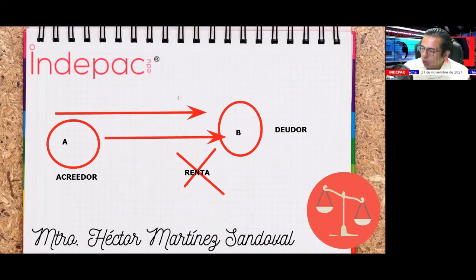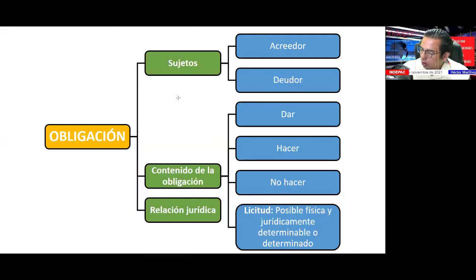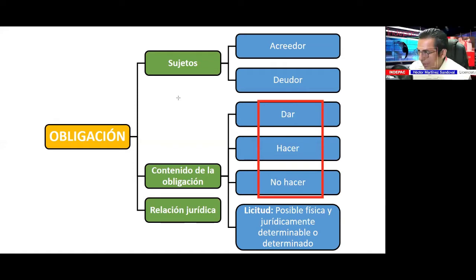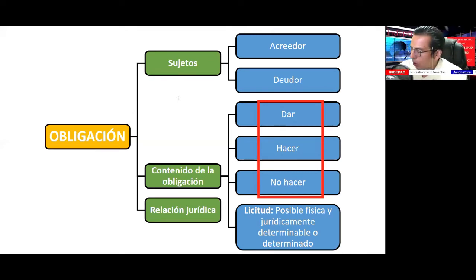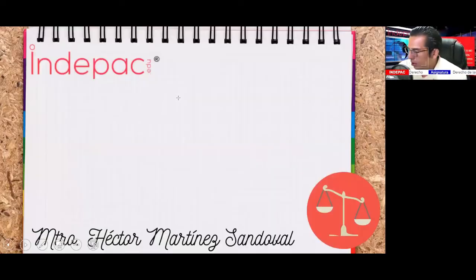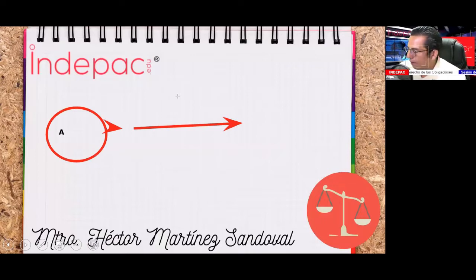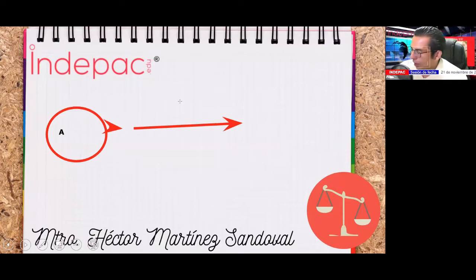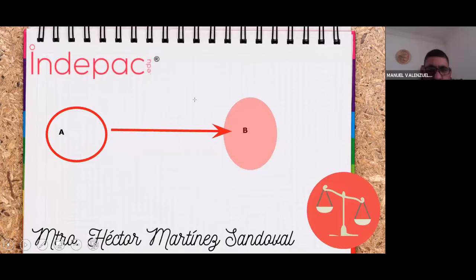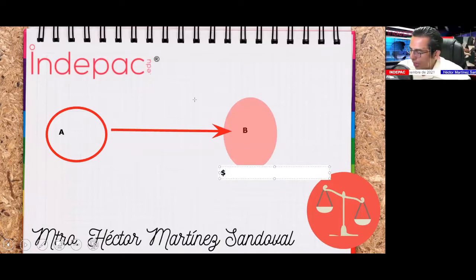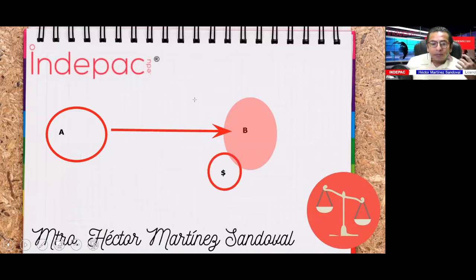¿Cuál es el compromiso que tuvieron A con B en el contrato de arrendamiento? B se comprometía a dar una cantidad de dinero. En un contrato de prestación de servicios a un albañil, yo soy A y contrato al albañil para que me construya unos cuartos. ¿A qué se compromete B en ese vínculo jurídico? A hacer. Y yo me comprometo a dar.